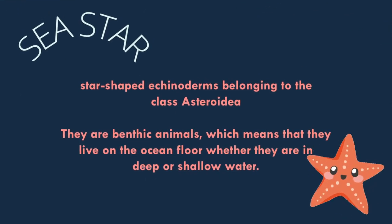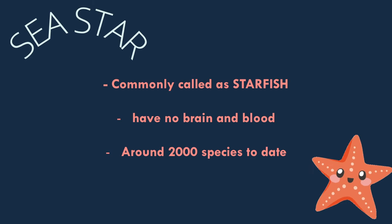Sea stars are star-shaped echinoderms belonging to the class Asteroidea. They are benthic animals, which means that they live on the ocean floor whether it is deep or in shallow waters. Sea stars are commonly called starfish, but they aren't actually fish — they lack a vertebral column and don't have fins. Sea stars have no brain and no blood, and there are around 2,000 species of sea stars to date. They actually have five arms, and if one of those is cut off, they can regenerate.